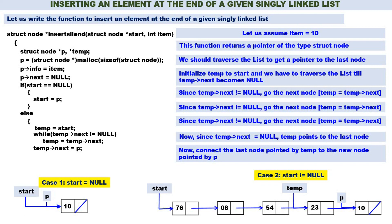Now P is connected to the linked list at the end — the node pointed by P is connected at the end. Return start. This is quite a simple function. Case 1 when start is null, Case 2 when start is not null — in Case 2, traverse the linked list to get a pointer to the last node, then inserting is very simple: just address manipulation.